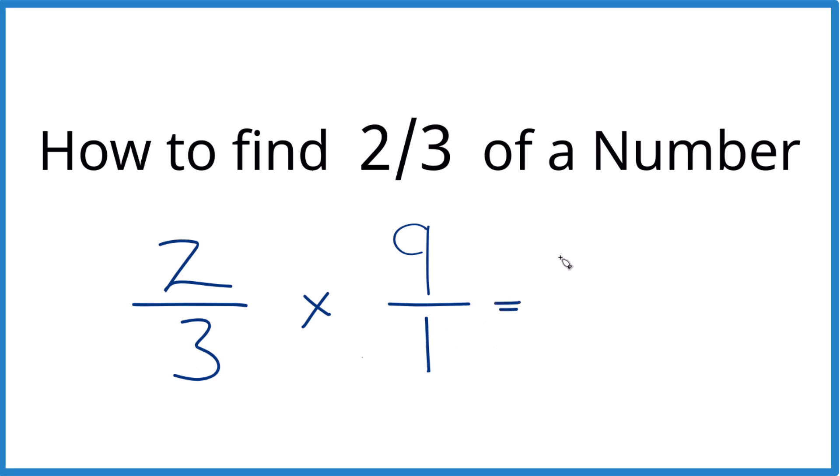So we take two times nine, that's 18. Three times one, that's three. And three goes into 18. Six times three is 18. So three goes into 18 six times. And two-thirds of nine, that's six.